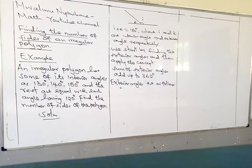Another concept that we require in this particular question is the concept of sum of exterior angles add up to 360 as you can see on my whiteboard. Now exterior angles are found as follows. I want us to go directly to the interior angles given. Then we find the exterior angles.